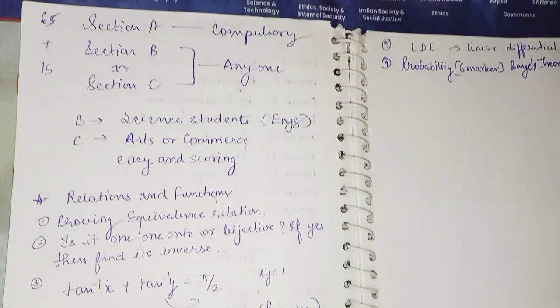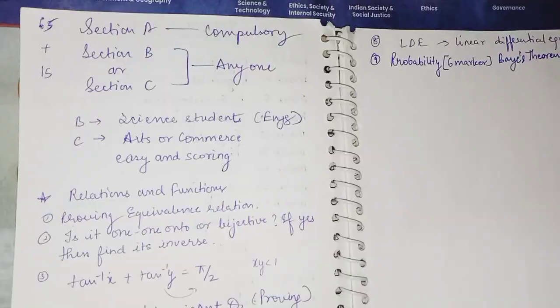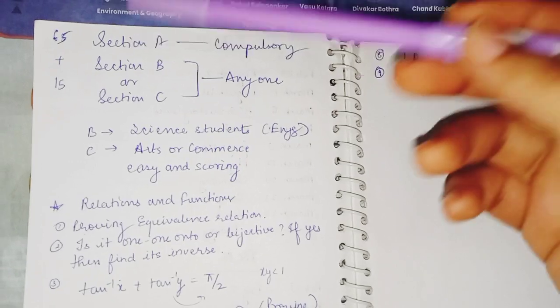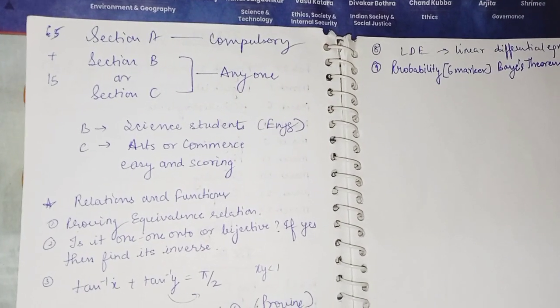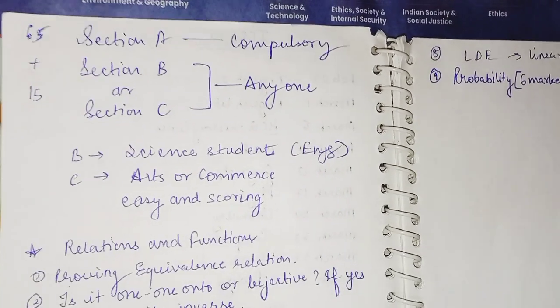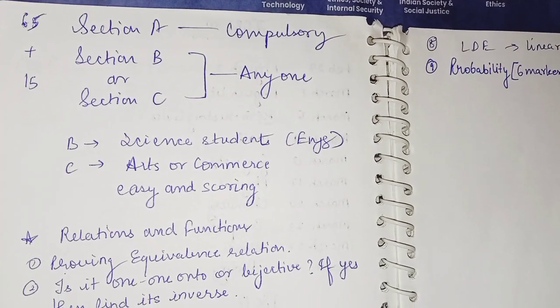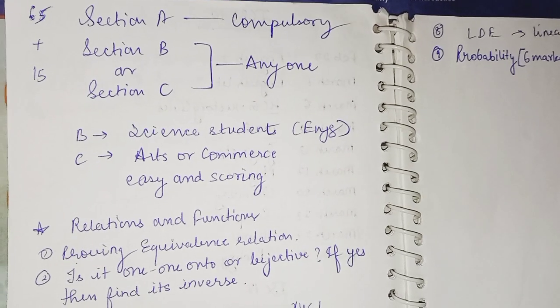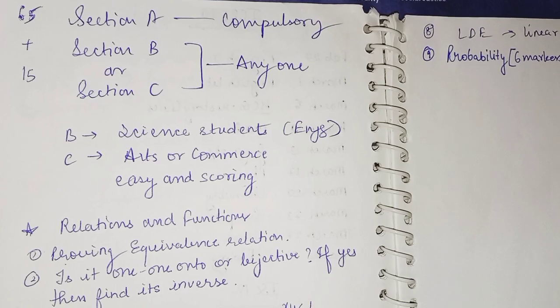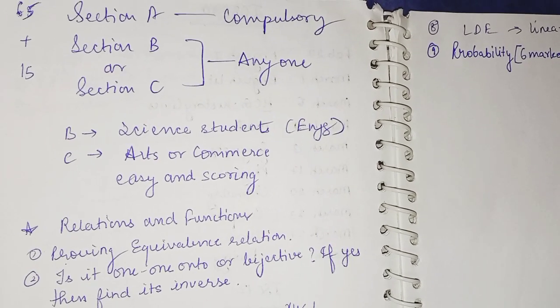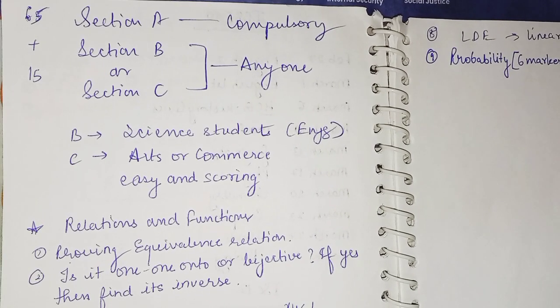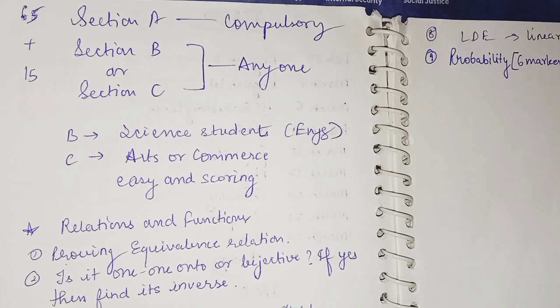You have your exam on 20th February. We have Section A, Section B, and Section C. Section A is compulsory, it is of 65 marks. On the other hand, Section B or Section C, you can attempt any one. I would recommend Section B for science students because it is related to engineering background, and if you are giving JEE examination, you can go with Section B. Section C is for arts or commerce students. Of course it's easy and scoring. If you have not prepared Section B, you can go with Section C, it's very easy.